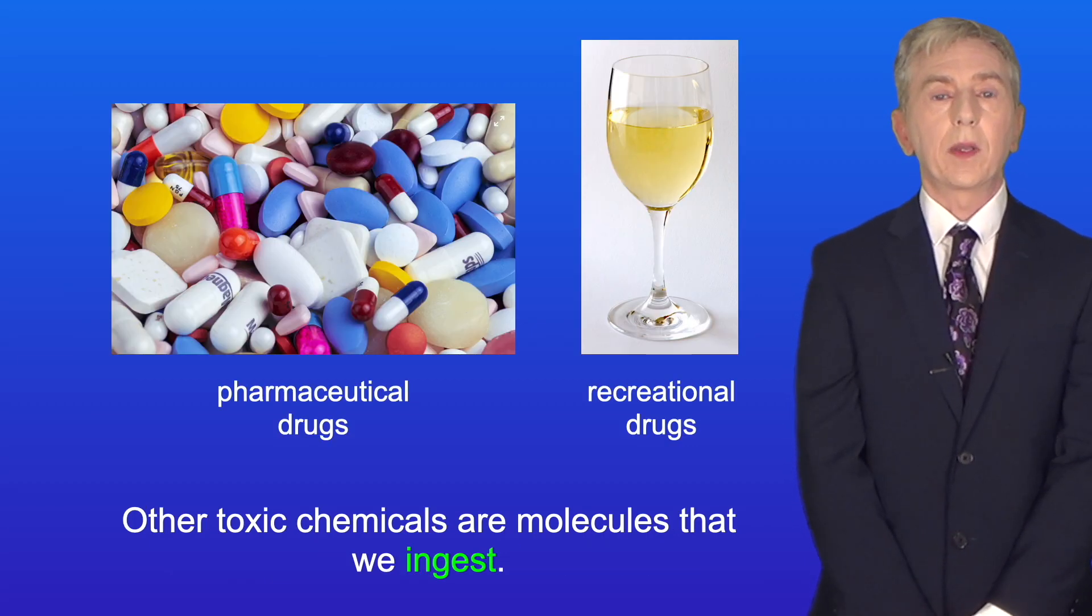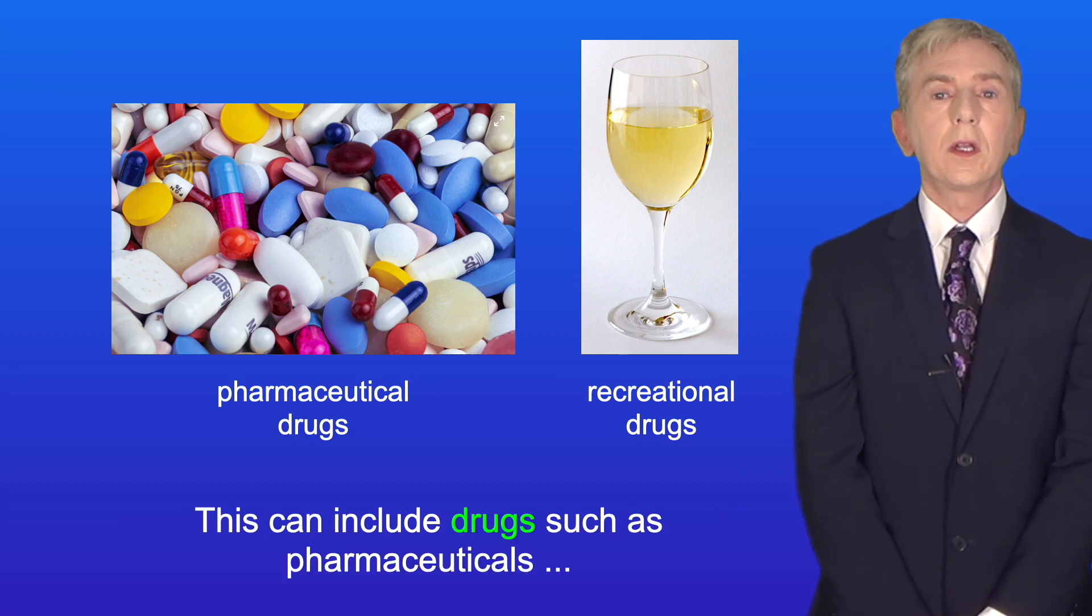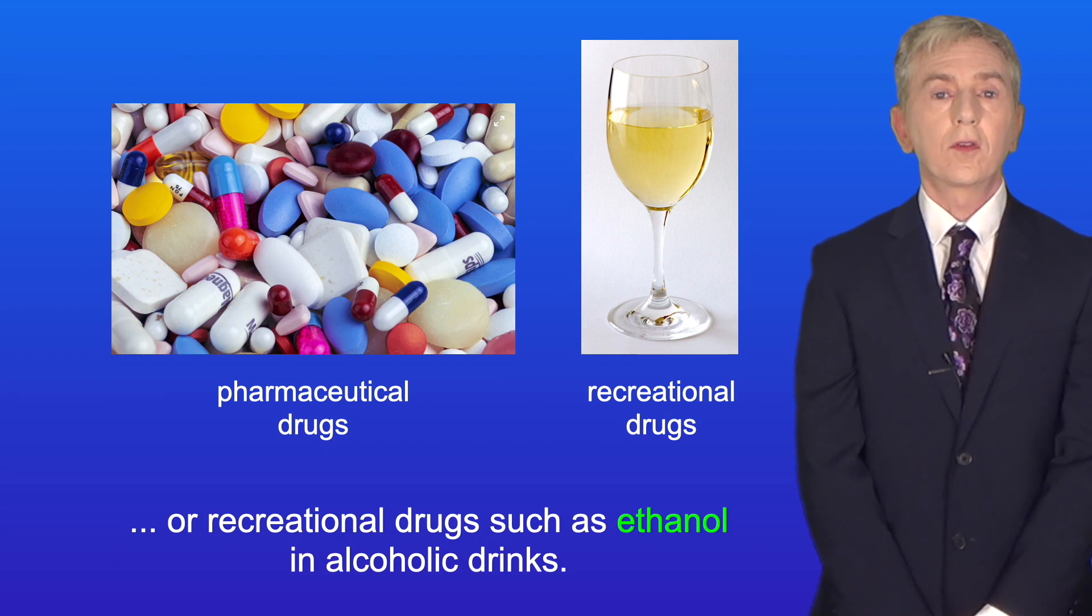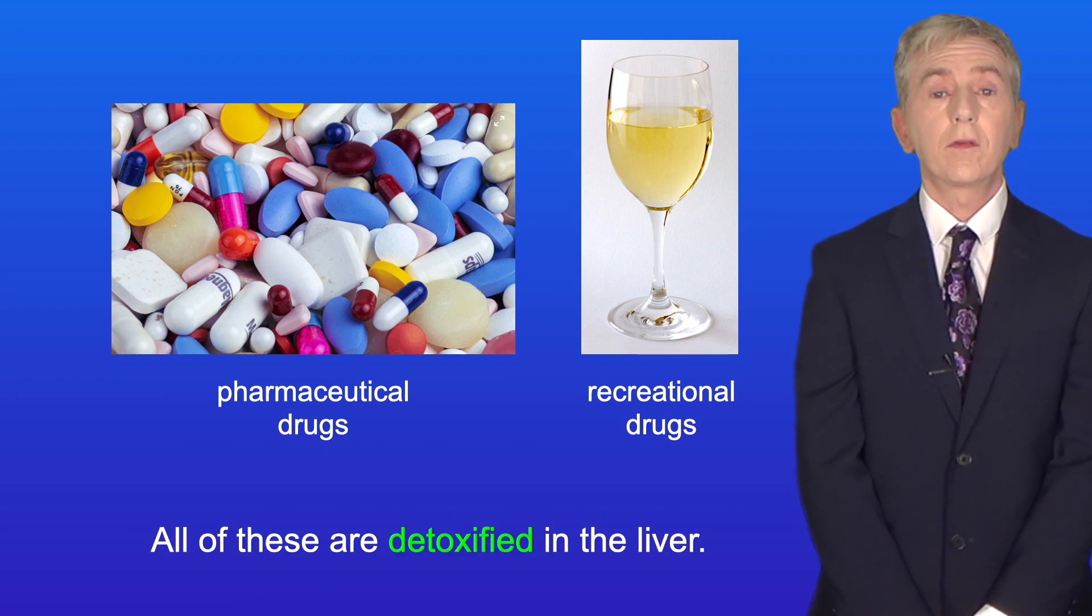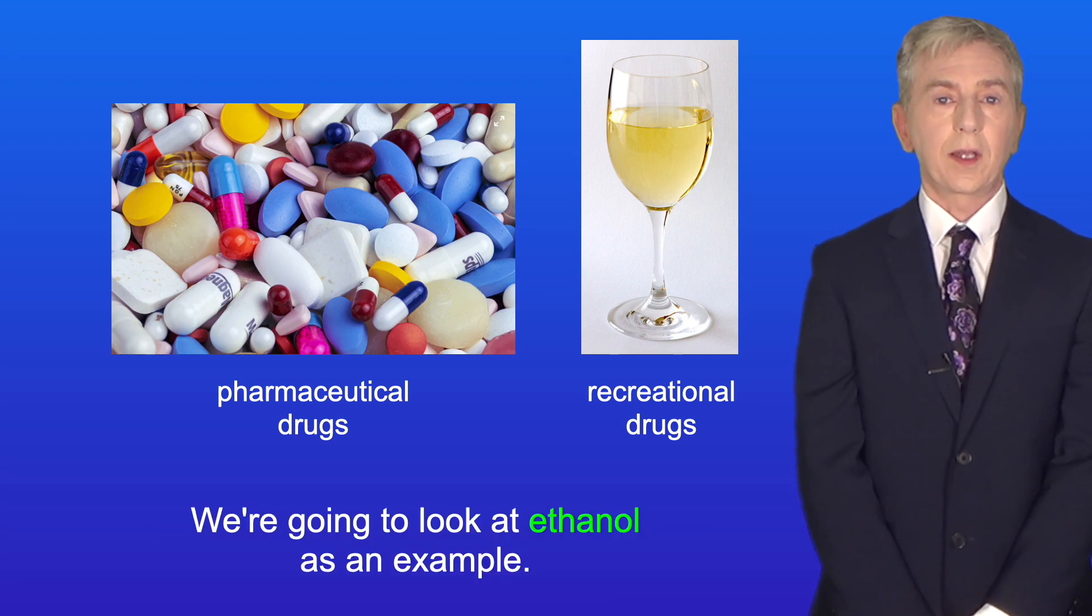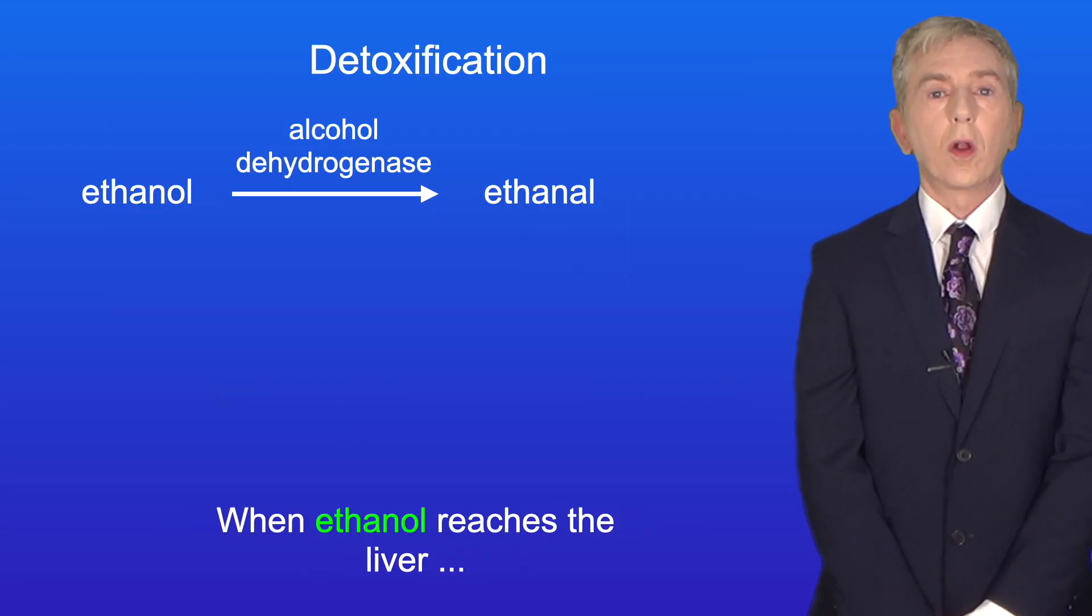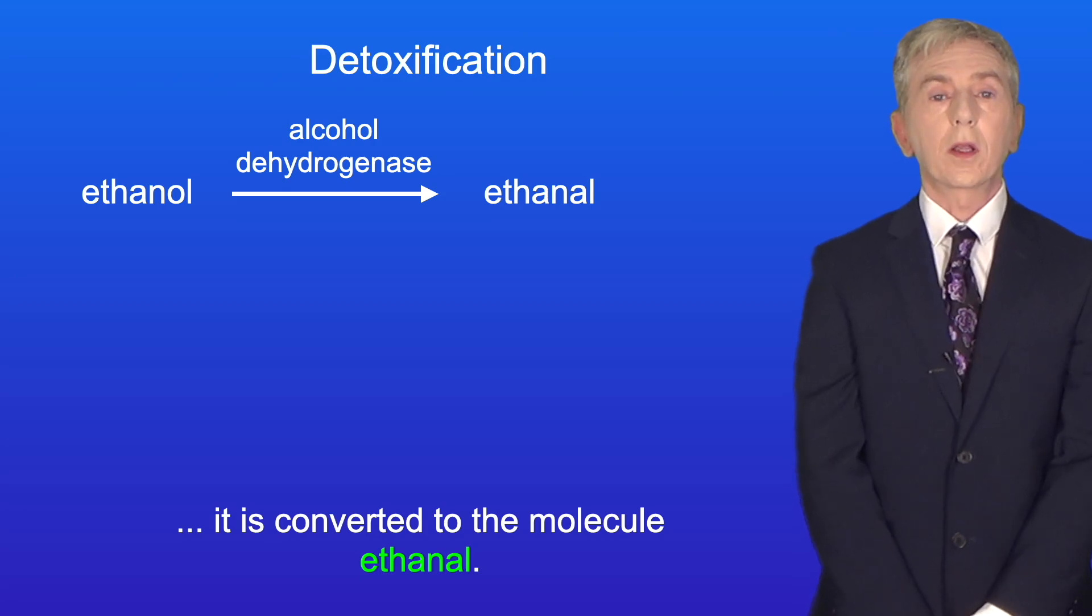Other toxic chemicals are molecules that we ingest. This can include drugs such as pharmaceuticals, or recreational drugs such as ethanol in alcoholic drinks. All of these are detoxified in the liver, and we're going to look at ethanol as an example. When ethanol reaches the liver, it's converted to the molecule ethanal.